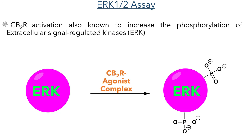The next assay the authors used was the ERK1/2 assay, which looks at the phosphorylation of extracellular signal-regulated kinase 1 and 2. The binding of an agonist to the CB2 receptor triggers the phosphorylation of these kinases, which activates them, and they then go on to phosphorylate other molecules and regulate functions such as cell growth and proliferation. We would therefore expect to see an increase in the level of ERK phosphorylation in the presence of compounds which act as agonists for the CB2 receptor.